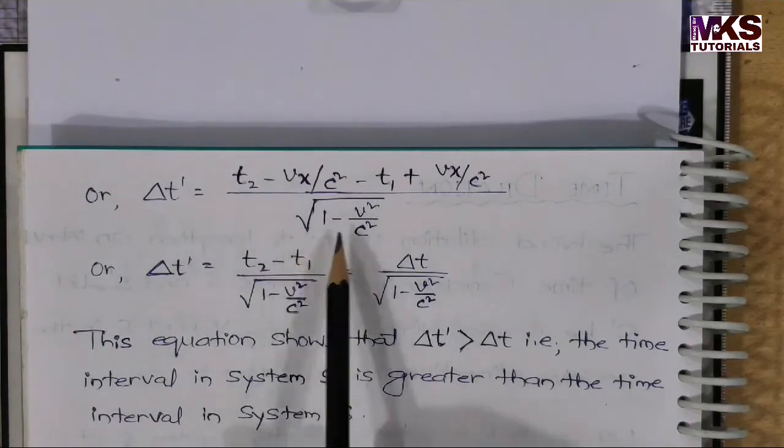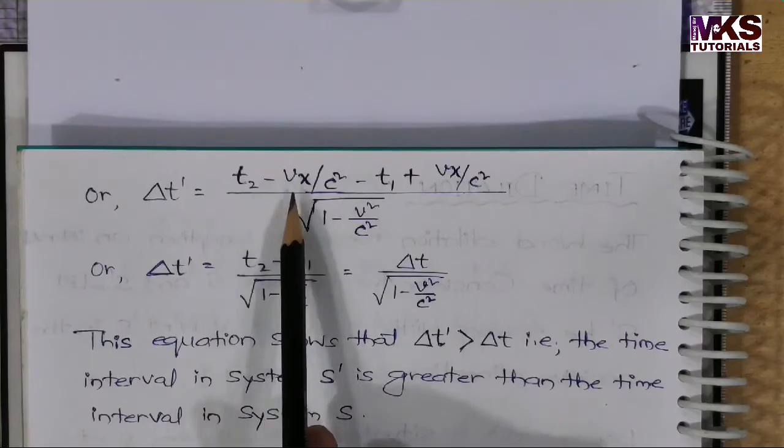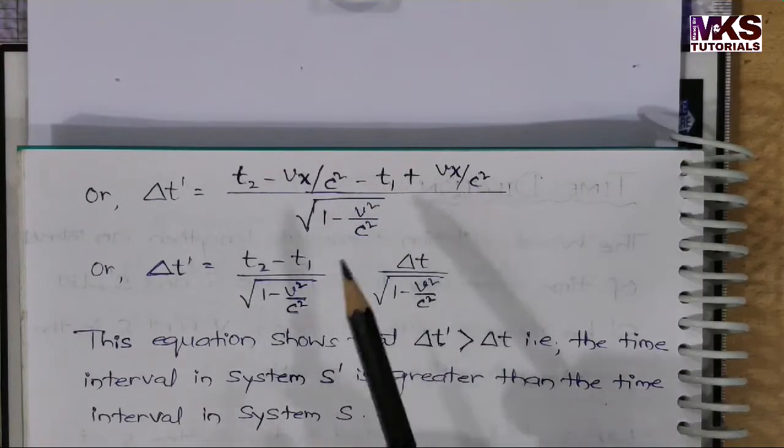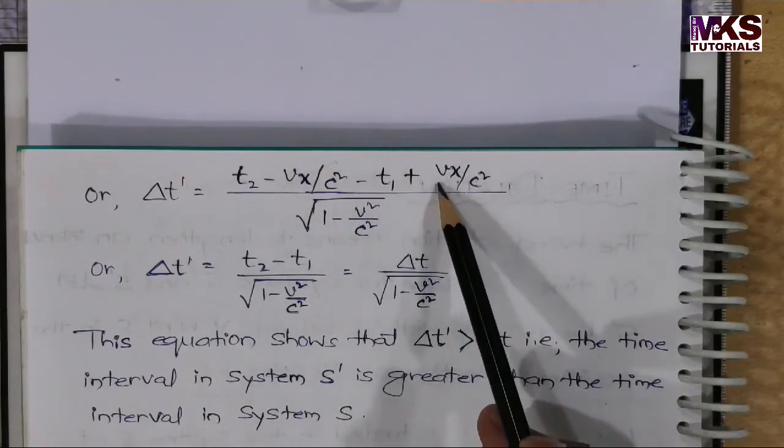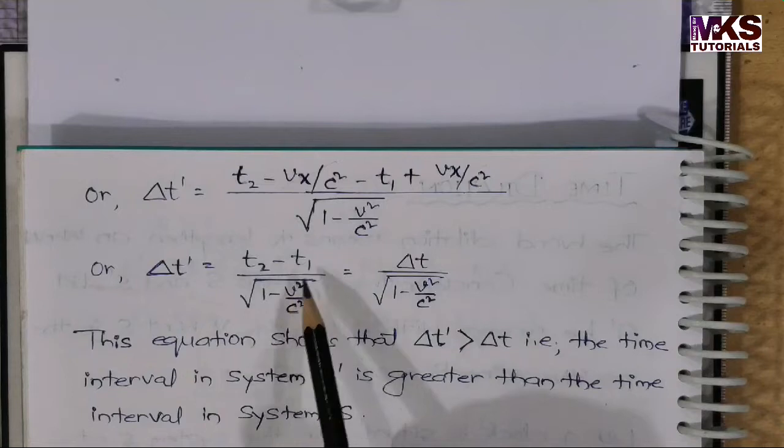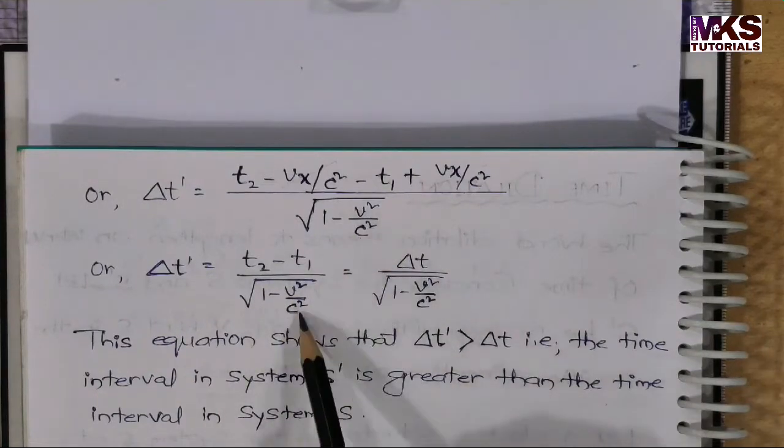The value is T1 Vx. t2 minus vx by c square minus t1 minus minus plus vx upon c square, so this term and this term cancels out. So my numerator is t2 minus t1 upon under root 1 minus v square upon c square. So this equation shows that Delta t' is greater than Delta t.